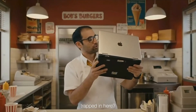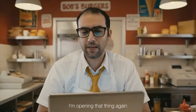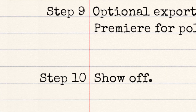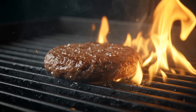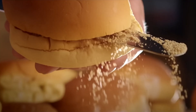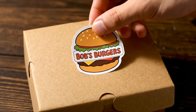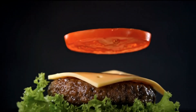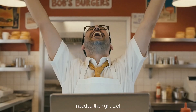Step nine, optional: export to Premiere for polish. No way I'm opening that thing again. Step ten: show off. Fresh produce, cooked slow, built for flavor. Bob's Burgers — it's not fast food, it's food that's worth the wait. That's the burger ad Bob's brain wanted. Turns out he just needed the right tool.